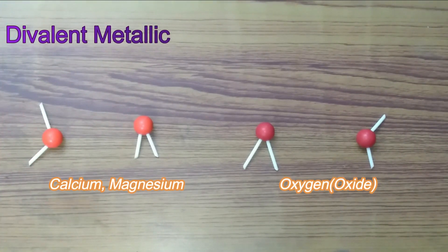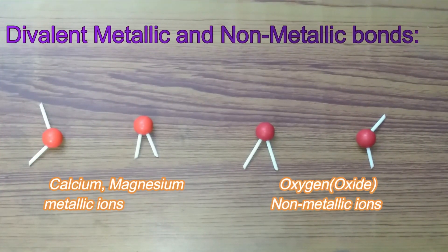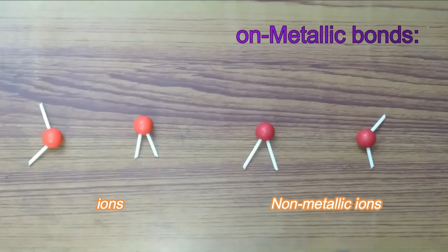The orange small ball represents divalent metals for example calcium, magnesium and the red small ball represents non-metals like oxygen.